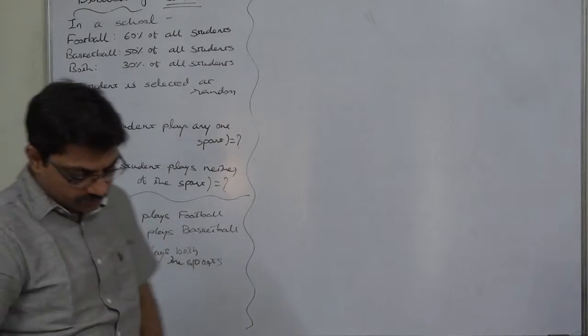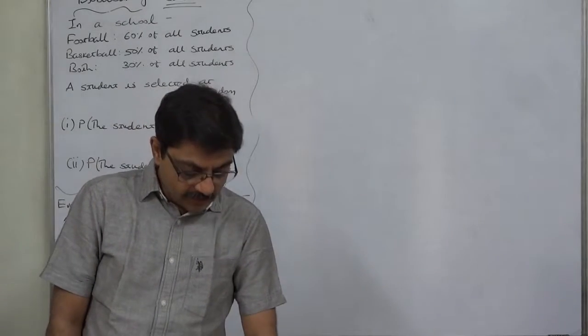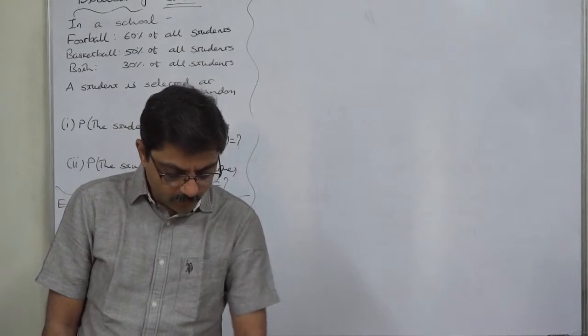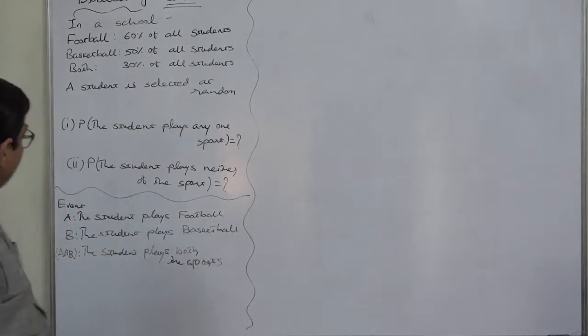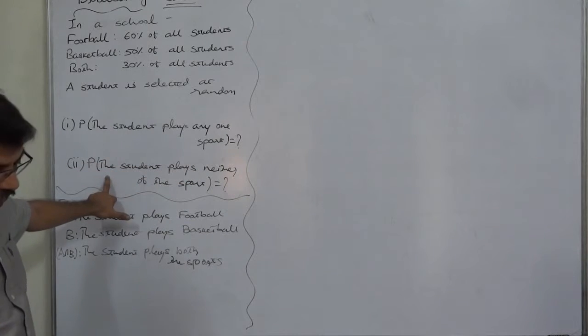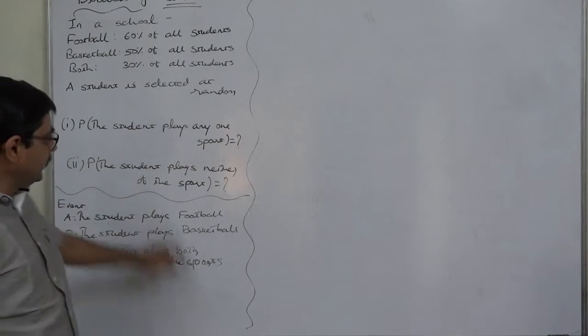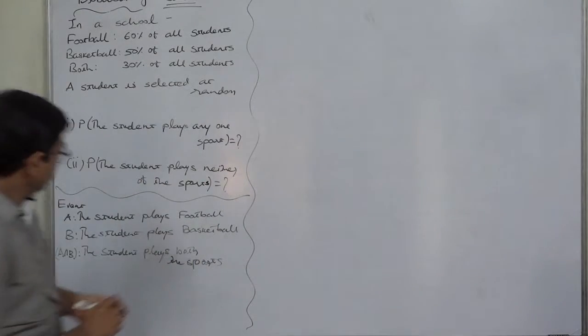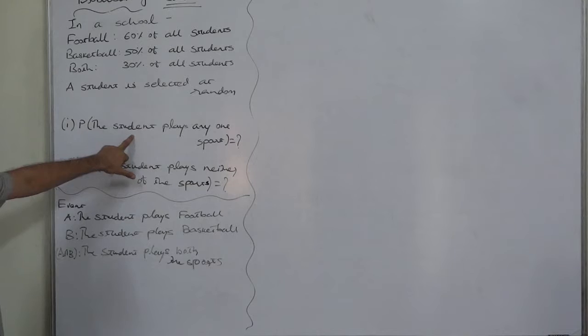If a student is selected at random, what is the probability that (1) he will play any one sport, and (2) he will play neither of the sports? He will play any of the sport, that means he or she will play either football or basketball.